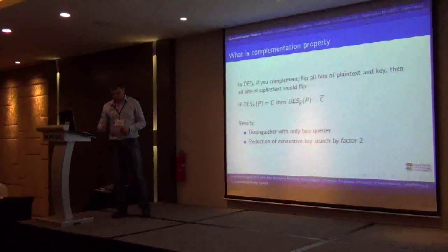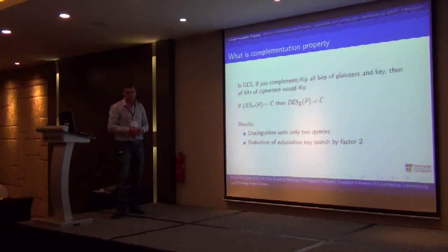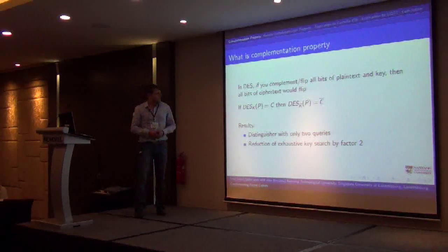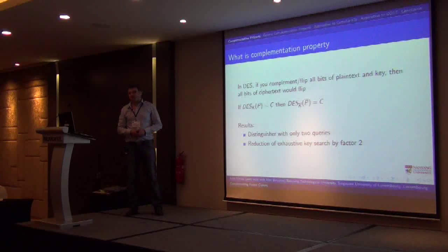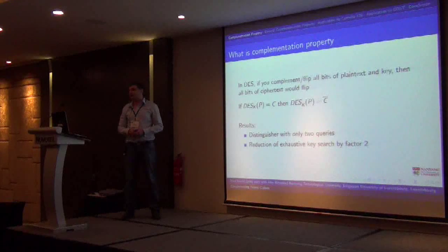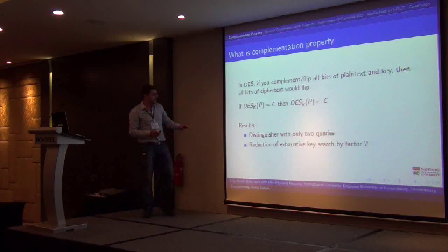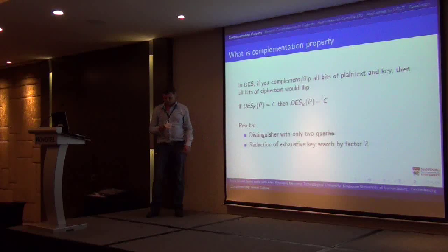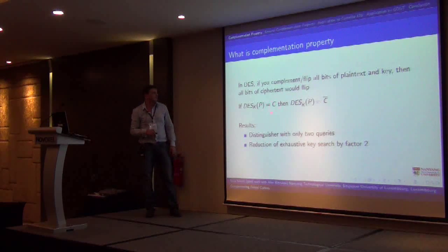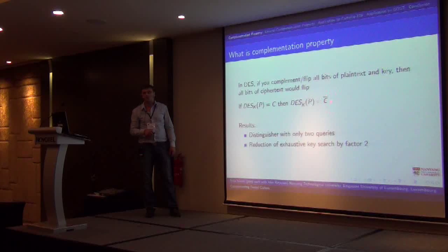Let's take a look at what is the complementation property of DES. It is a simple observation that says that if one complements or flips all of the bits of the plaintext and the key in DES, then all of the bits of the ciphertext will flip. Basically, it means if you take any key in DES and any plaintext and produce some ciphertext, and then you complement the key and you complement the plaintext, you'll get the complement of the previous ciphertext.